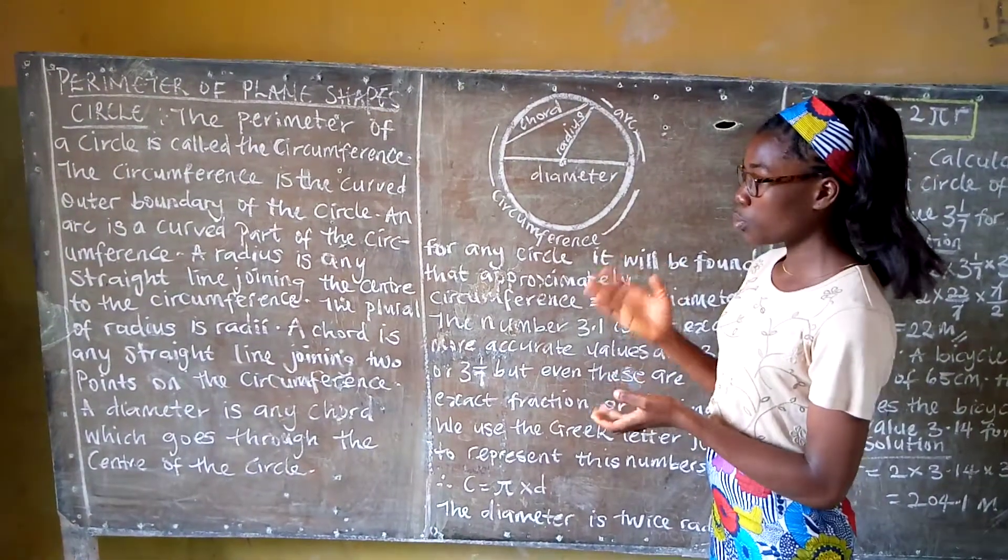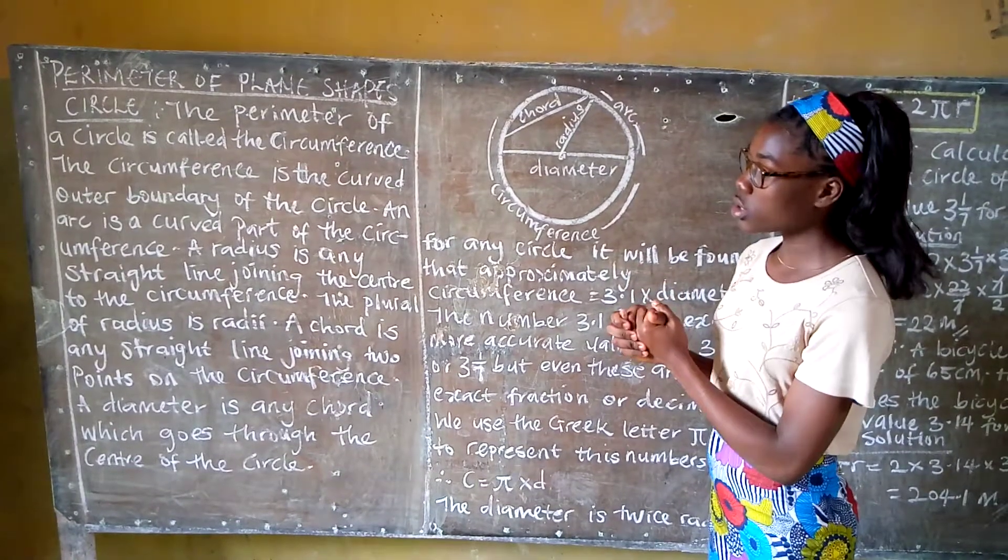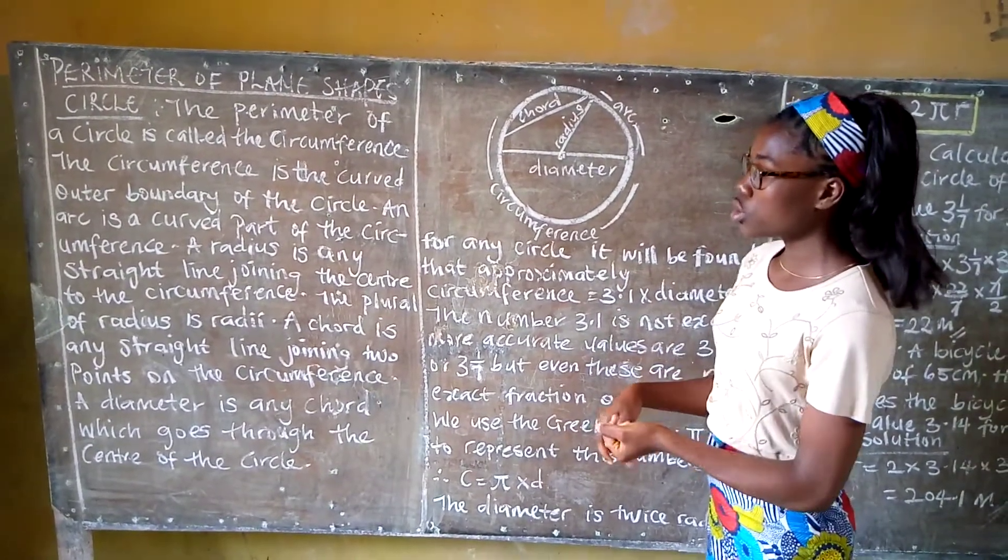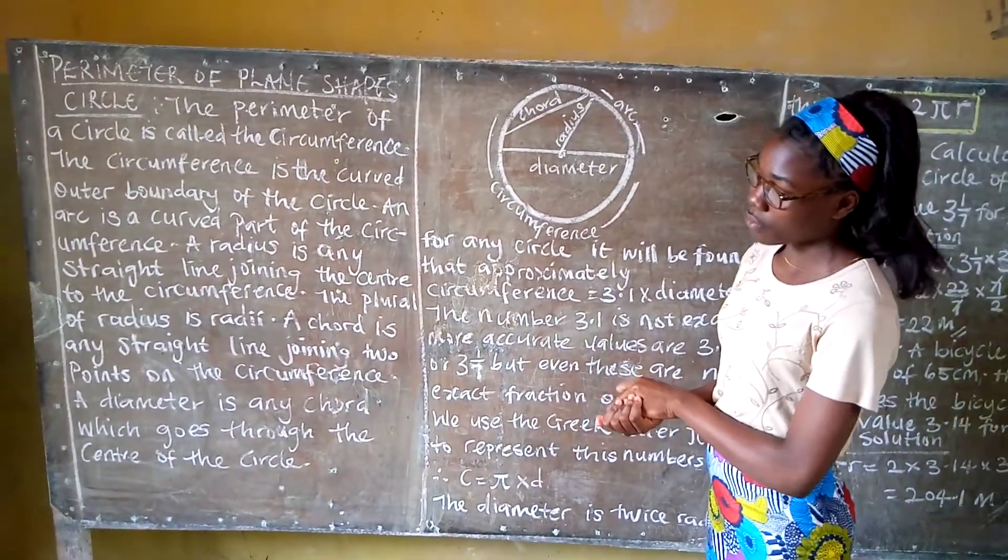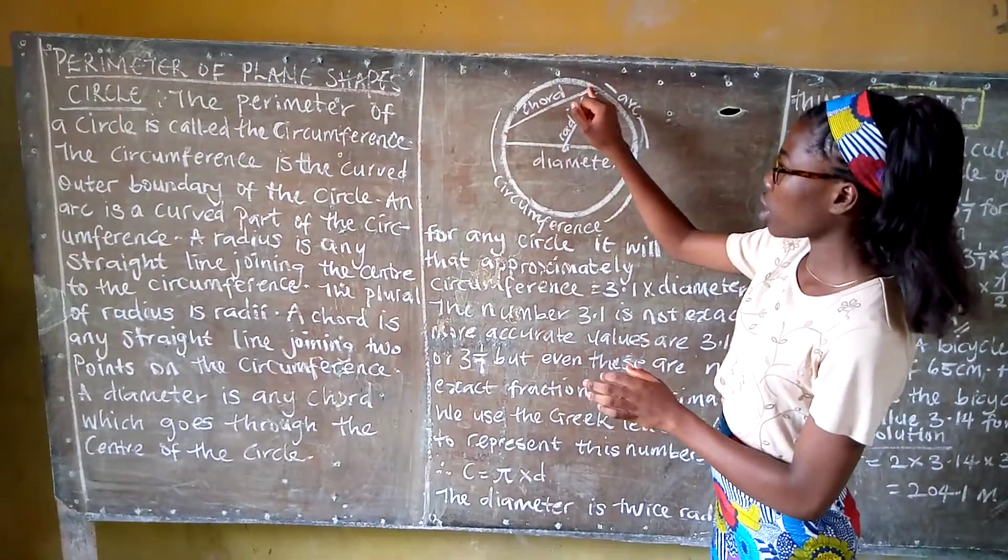The plural of radius is radii. Then we have the chord. The chord is any straight line joining two points on the circumference.